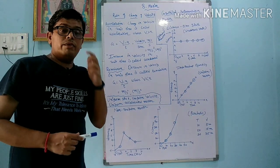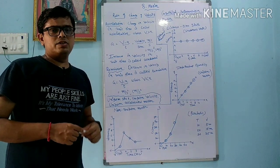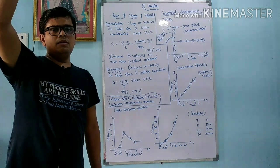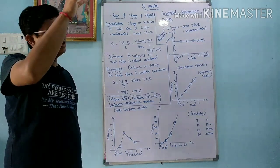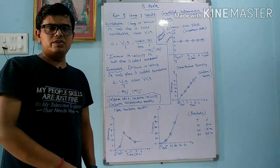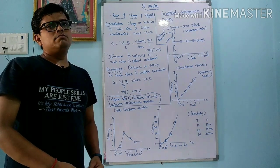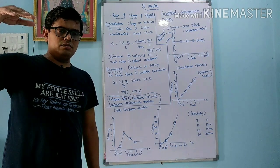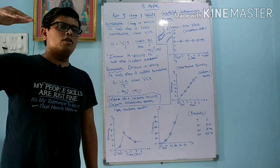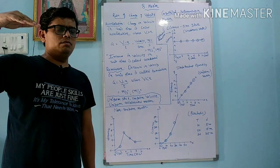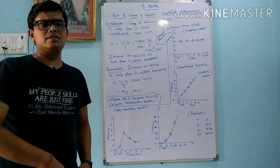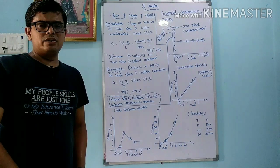Now where do you experience acceleration? When you drop any object from a high-rise building, the object continuously goes faster towards the earth — that is acceleration. Or whenever you are on a slope and going downward on a bridge, your velocity continuously increases, so we can say we are in accelerated motion.